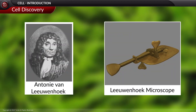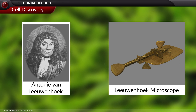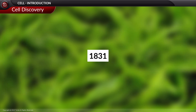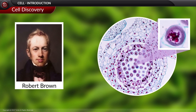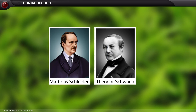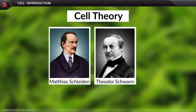Antony van Leeuwenhoek became the first scientist to observe live cells when he observed cells of Spirogyra under a microscope. Later, in 1831, Robert Brown, a Scottish botanist, discovered a round-shaped structure in the plant cells and named it a nucleus. Based on these discoveries and other observations, Matthias Schleiden and Theodor Schwann proposed two basic principles and called the cell theory.